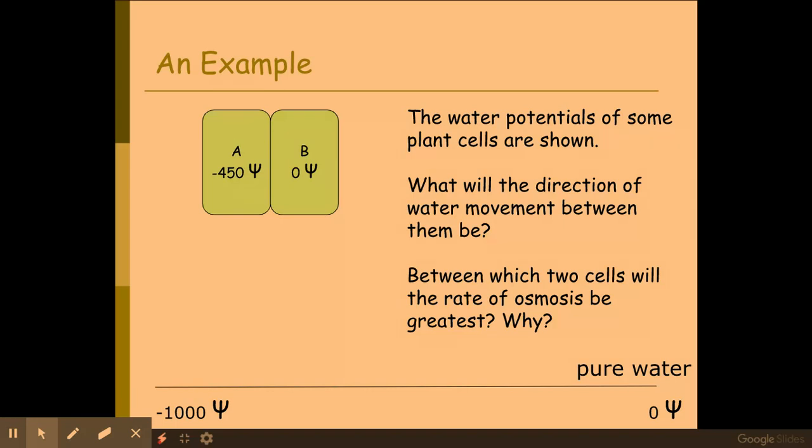So you always get marks for saying where the water potential is high, where it's low, that water is moving by osmosis and down the water potential gradient. You may also get more marks for talking and applying it to the actual question.